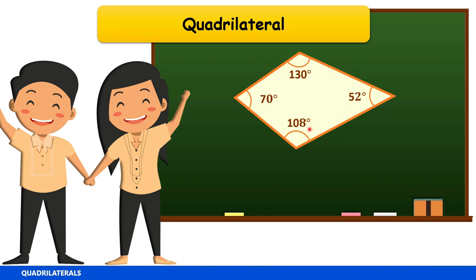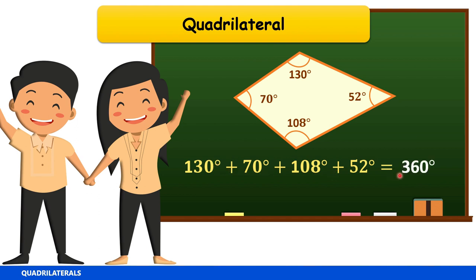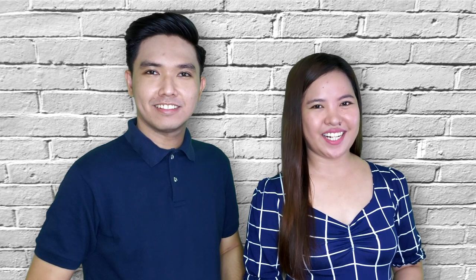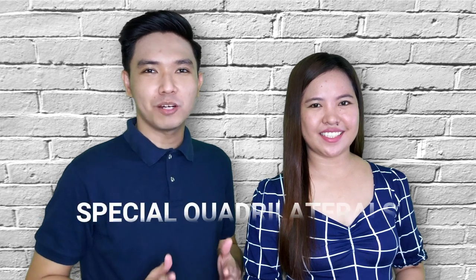If we add these four angles, the sum is 360 degrees. So a quadrilateral has four sides and the sum of its four interior angles is 360 degrees. There are different types of quadrilaterals — let's talk about special quadrilaterals.